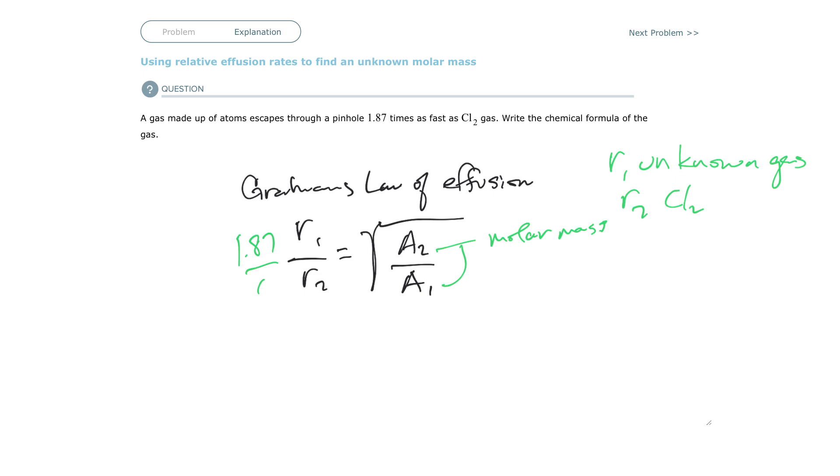So if 1.87 is the unknown, then A1 must be the unknown, and A2 must be the molar mass of chlorine gas. So what's the molar mass of chlorine gas? Well, the chlorine gas, remember, it's a molecule, so it's Cl2.